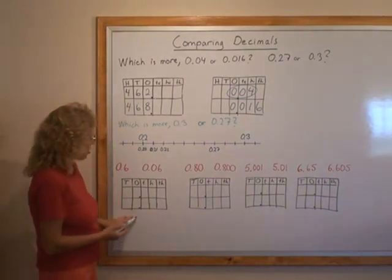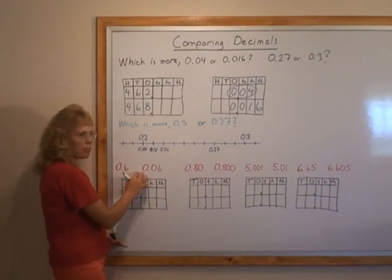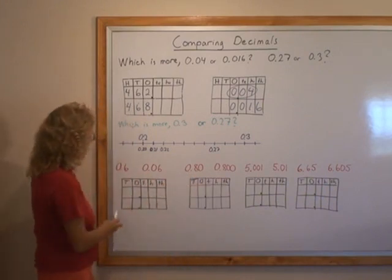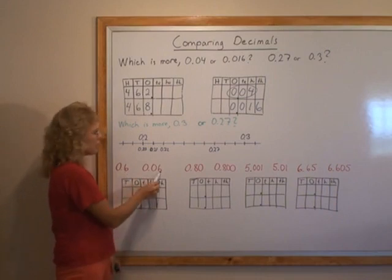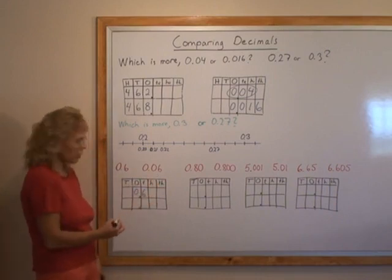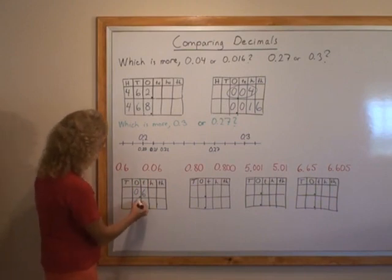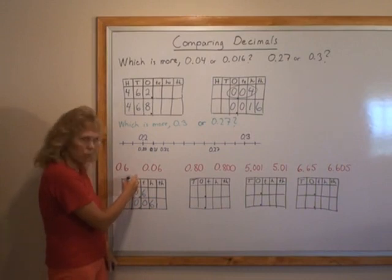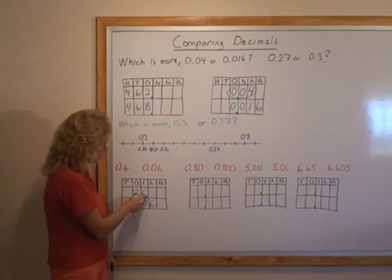Let's use the place value charts also to figure out which ones of these numbers are greater. I have here 6 tenths and 6 hundredths. 0.6 goes like this on the chart and then 0.06 goes like this to the chart. Now you look at the ones. They have the same amount of ones. And they don't have the same amount of tenths. This one has 6. This one has none. So therefore, this is bigger.